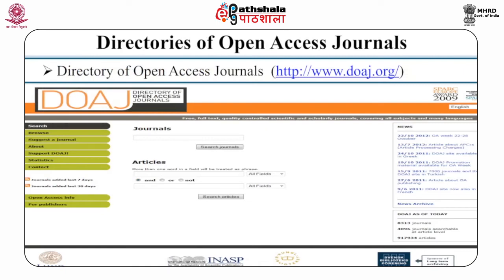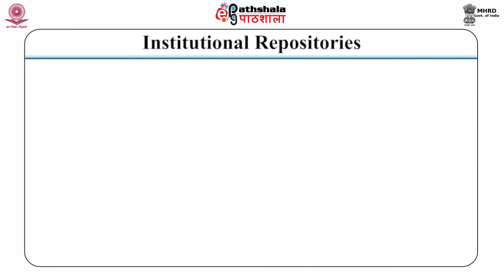Institutional repositories are web-based archives of scholarly material designed to organize and provide seamless access to scholarly publications produced by faculty or researchers of an institution in all subject disciplines. There are a total of 3,594 worldwide repositories indexed by the Registry of Open Access Repositories, ROAR, which includes 99 repositories in India. The Directory of Open Access Repositories has indexed a total of 2,500 worldwide repositories, including 62 Indian repositories. Let's have a view of the top 10 worldwide repositories in India indexed in Webometrics.